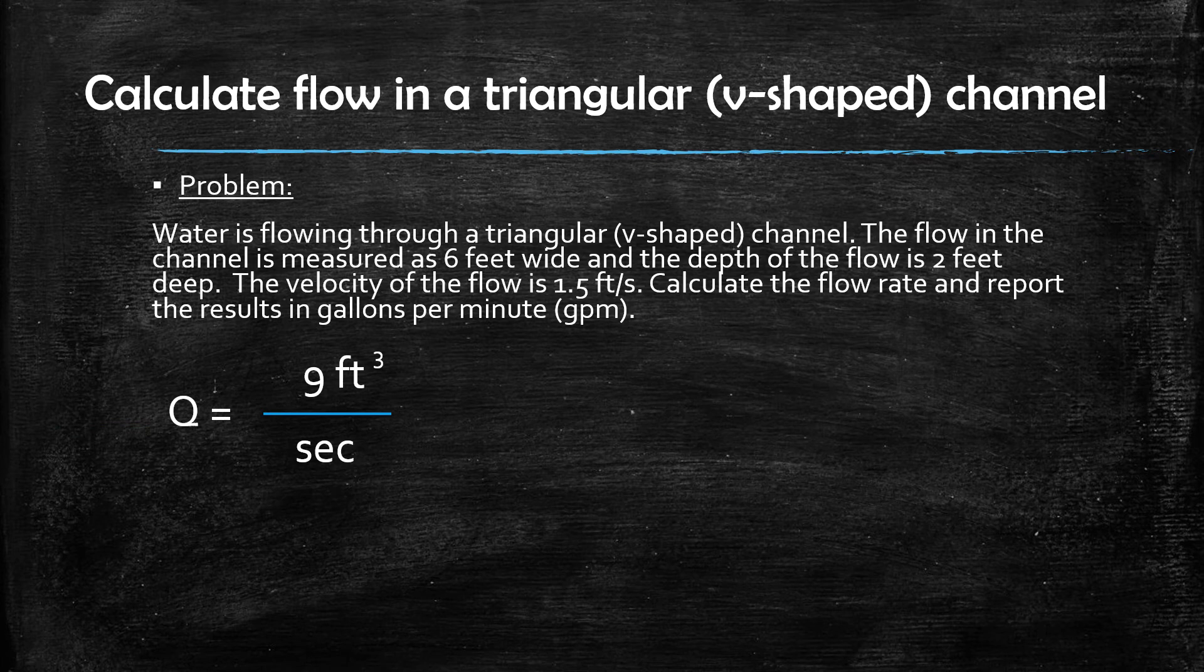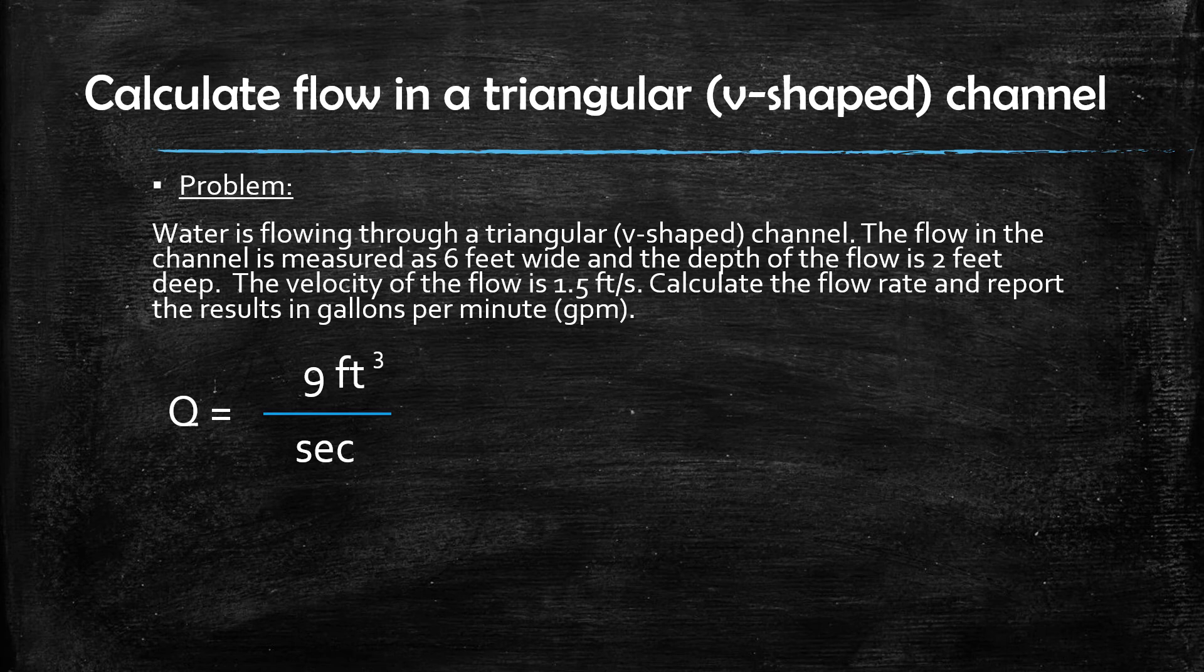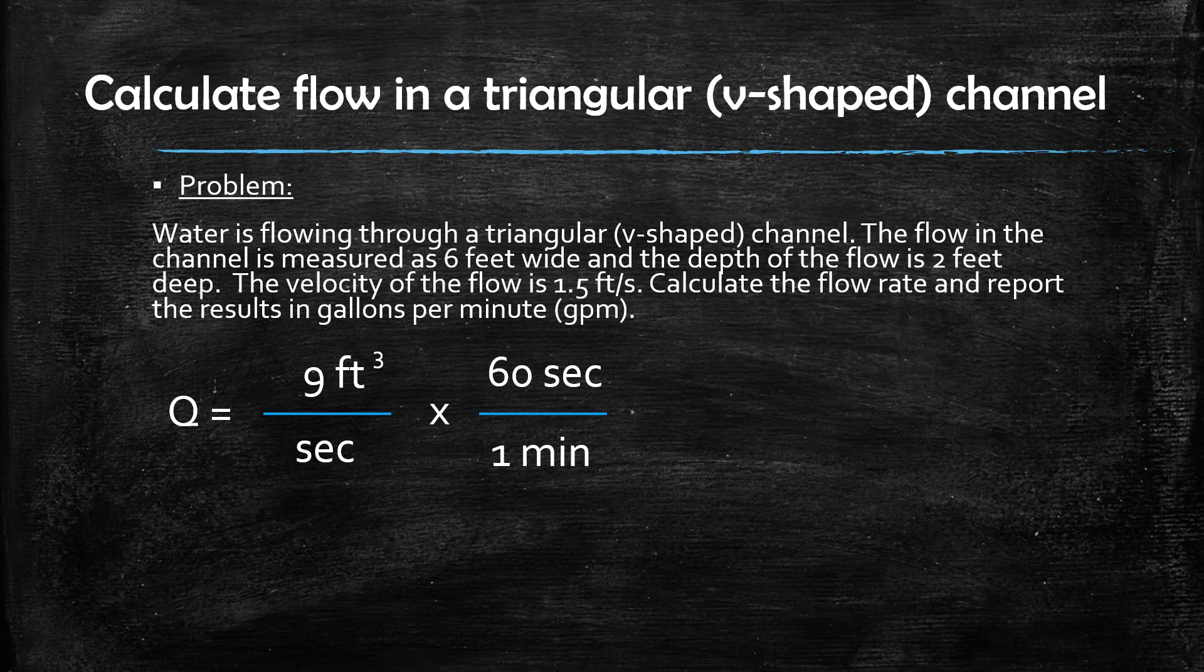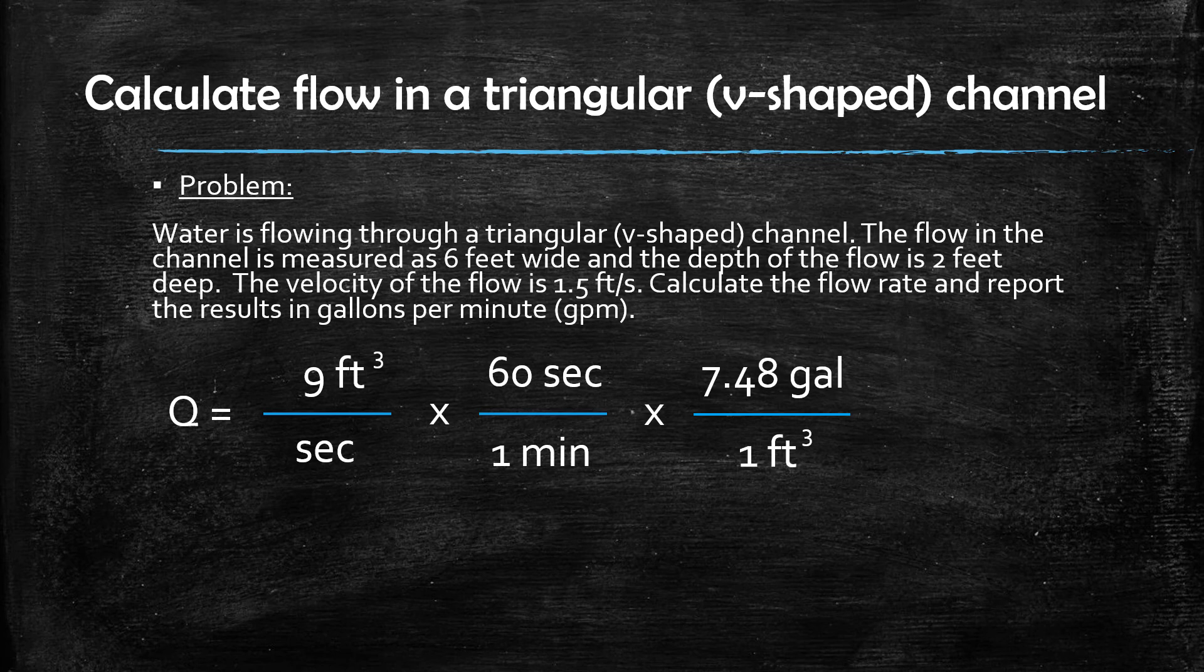The last step to complete the problem is to convert the result that we have from cubic feet per second to gallons per minute. You can accomplish this by taking the result that we just calculated, 9 cubic feet per second, and multiplying it by 60 seconds per minute, and further multiplying it by 7.48 gallons per cubic foot.